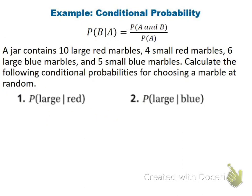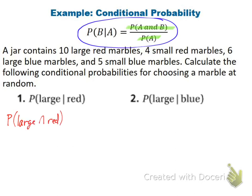For conditional probability, the formula is: the 'and' probability on top divided by the probability of the thing that matters first. First problem: find the probability of a marble being large and red, divided by the probability it's red. Large and red marbles: 10. Total red marbles: 14. So 10 over 14 reduces to five-sevenths, or 71.4%.